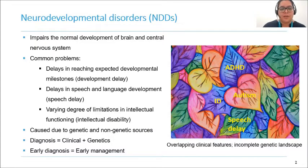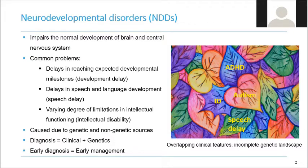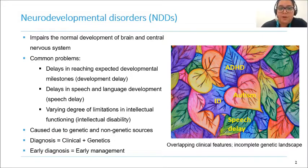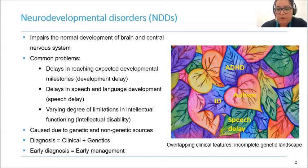I'll start off with a brief introduction about neurodevelopmental disorders. These are disorders that impair the normal development of the brain and central nervous system. Some of the common problems we start noticing in affected individuals include delays in reaching expected developmental milestones — often referred to as developmental delay — delays in speech and language development, and a varying degree of limitations with intellectual functioning, from mild, moderate, and severe.